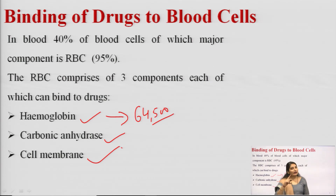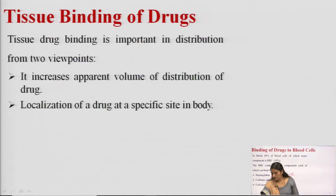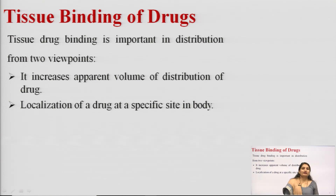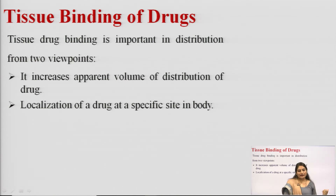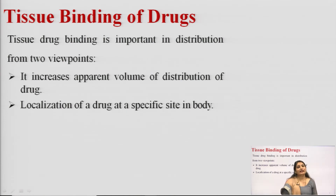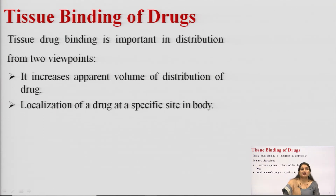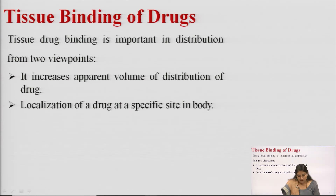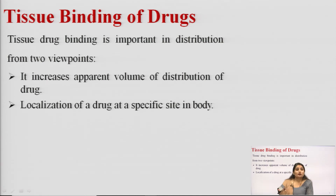Now, regarding tissue binding of drugs: body tissues apart from HSA constitute 40% of body weight, which is 100 times more than HSA. Therefore, tissue drug binding is very important in drug distribution. A drug can bind to one or more of several tissue components.